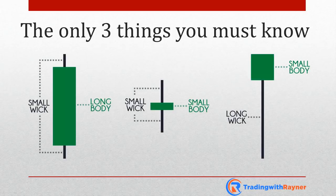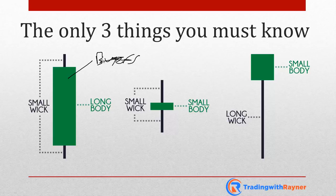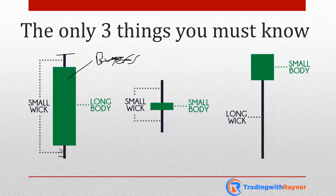So you can see over here the first candle has a strong-bodied close — buyers are in control. And look at the wick: it's relatively short, so there isn't really much price rejection. So for this candlestick, the buyers are in control.